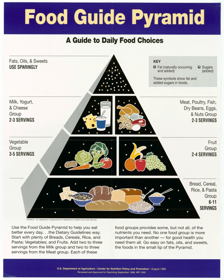It has been suggested that people serve more food into larger dishes due to the Delboeuf illusion, a phenomenon in which two identical circles are perceived to be different in size depending upon the sizes of larger circles surrounding them. Plate color has also been shown to influence perception and liking. In one study, individuals perceived a dessert to be significantly more likable, sweet, and intense when it was served on a white versus a black plate.